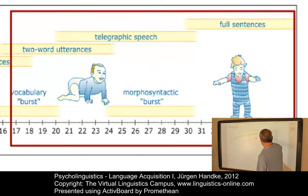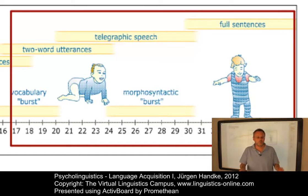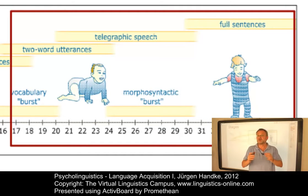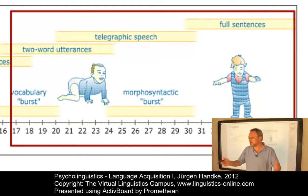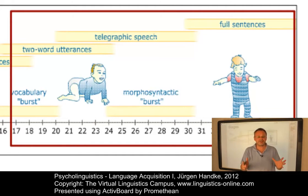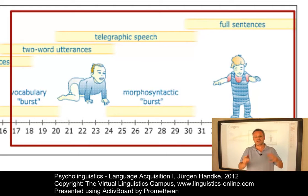Towards the age of three, we find a stage of telegraphic speech, where three or more word combinations with few functional or inflectional elements — like 'milk all gone' — occur, and then even full sentences with increasing utterance length and complexity. Along the way, the child masters the essential ingredients of his language. These central aspects will be discussed in a follow-up e-lecture on language acquisition, but let's have a brief look at these central issues first.